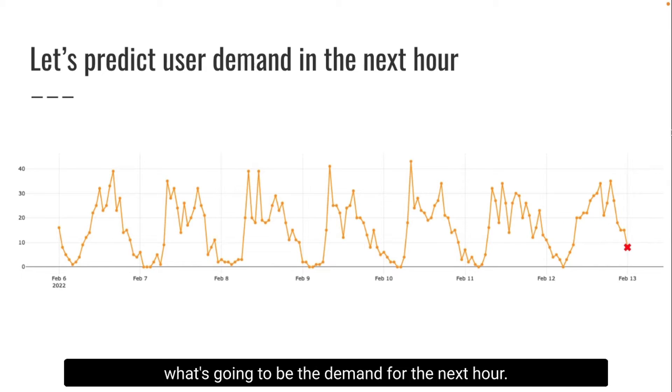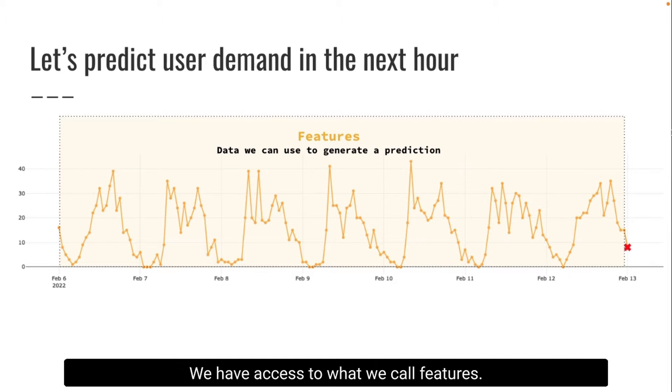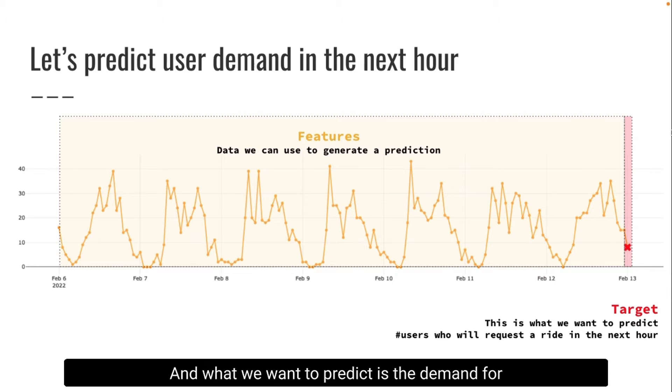For that, we have access to what we call features. There is data that we have available to input into our model, this context we can use to derive our predictions. These are historical values of taxi rides for this example, and what we want to predict is the demand for the next hour.